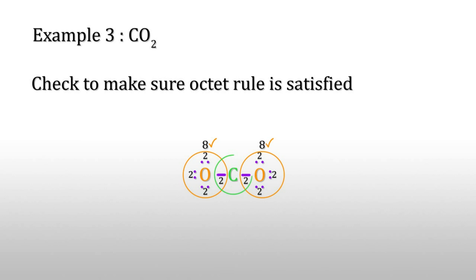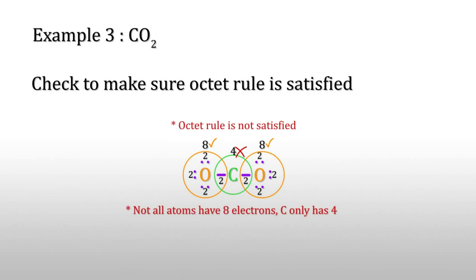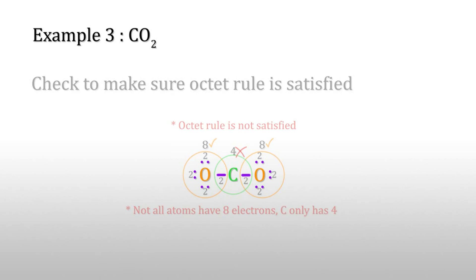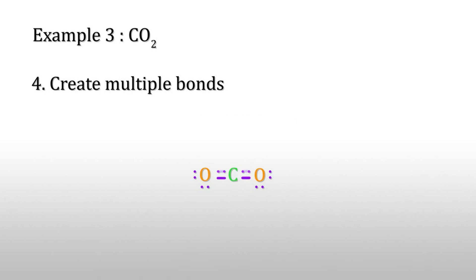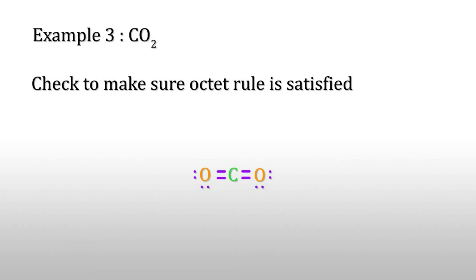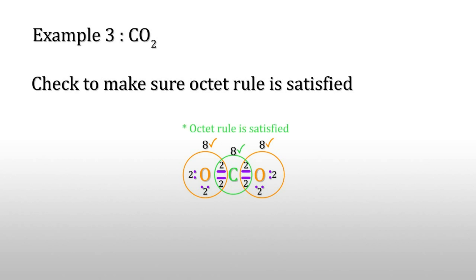Now count for carbon — only four electrons are there, so it is not satisfied. What do we have to do? Create multiple bonds: shift the electrons. Now check again. Oxygen satisfies the octet rule and carbon also satisfies the octet rule. So this is the Lewis structure for CO2.